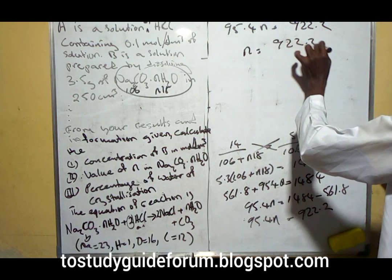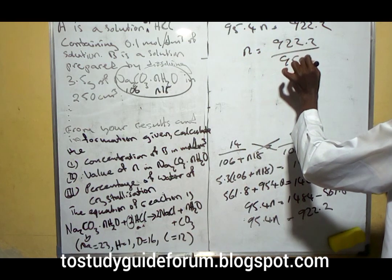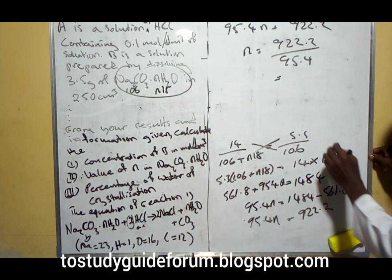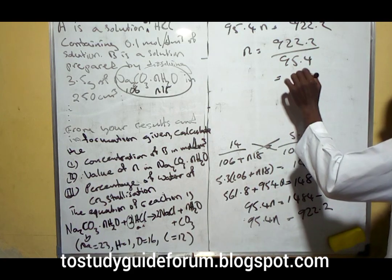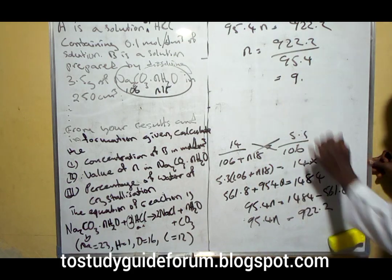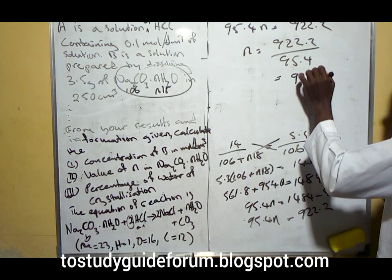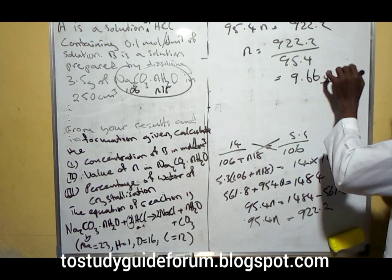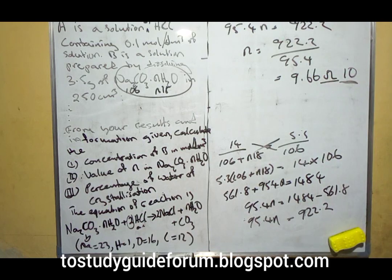We have 95.4n equals 922.2. Dividing by 95.4, that will give us approximately 10 molecules of water of crystallization.